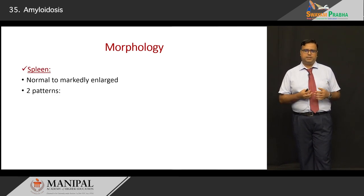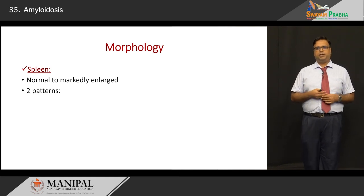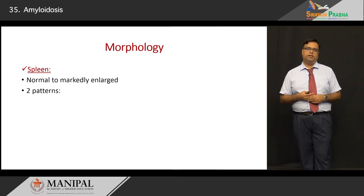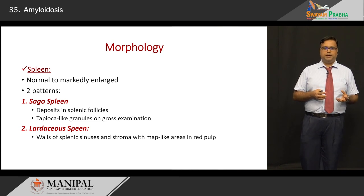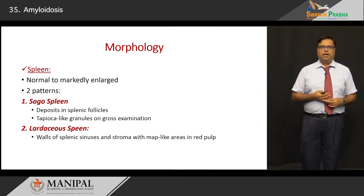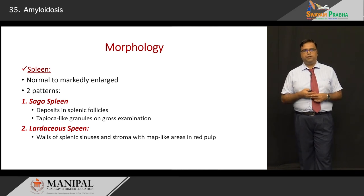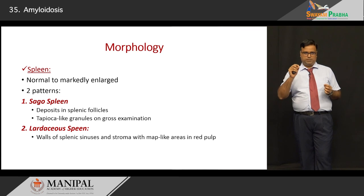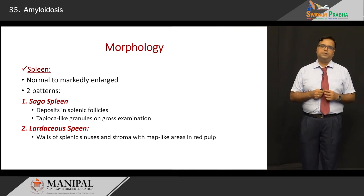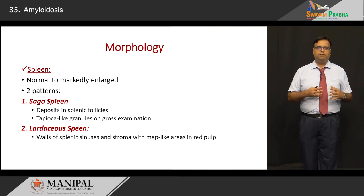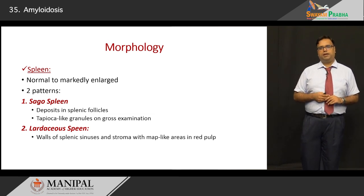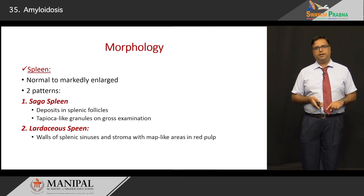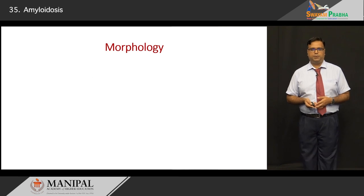The spleen ranges from normal to markedly enlarged, as it is a reticuloendothelial organ. Two particular patterns are recognized depending on where the deposits are. If deposits are in the splenic follicles or lymphoid follicles, you get large tapioca-like granules — like grains of sago — called sago spleen. If deposits involve the walls of the splenic sinuses and entire stroma of the red pulp in map-like geographic areas, it is called lardaceous spleen. Remember these two patterns of splenic amyloidosis.